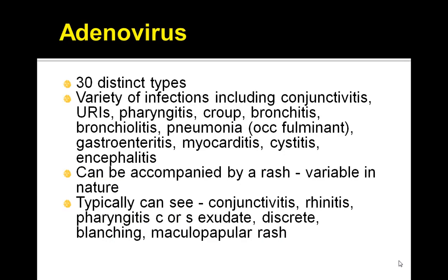Let's review the adenovirus. There are 30 distinct types and a variety of infections including conjunctivitis, URI, pharyngitis, croup, bronchitis, bronchiolitis, pneumonia, myocarditis, and encephalitis. So it's associated with a variety of symptoms.